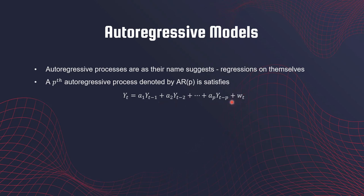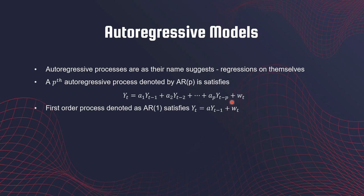The error term is WT. The first order process is denoted as AR(1), and it satisfies this particular model where YT is the response and the predictor is the past value YT minus one.